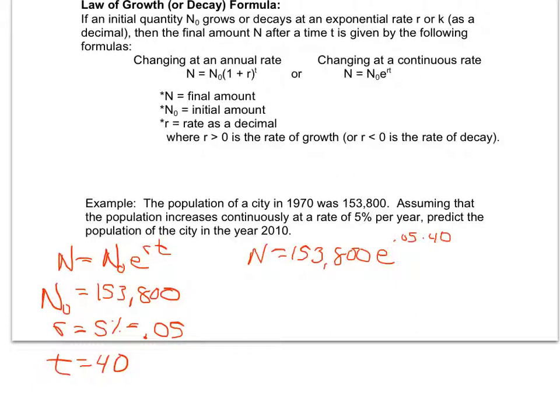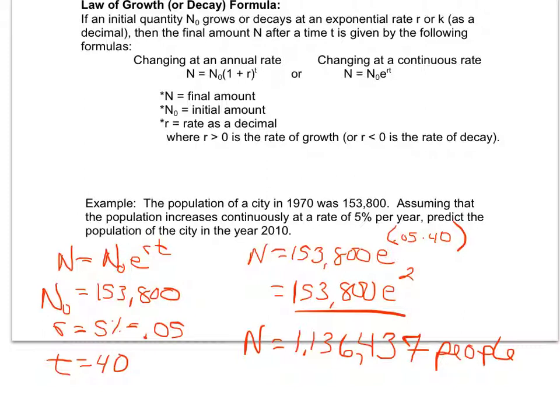From here, my calculator knows order of operations. However, it will not do my exponents separately. So I do have to go ahead and either put parentheses around this, or oftentimes I find it easier to just take one additional step before putting the whole thing in my calculator and saying 0.05 times 40 is 2. And now entering this into my calculator. When I enter that into my calculator, I get a new population of, I'm going to round to the nearest whole number since I'm talking about people, 1,136,437, and I'm going to go ahead and add my units on there and say people. So that would be my prediction for my new population.